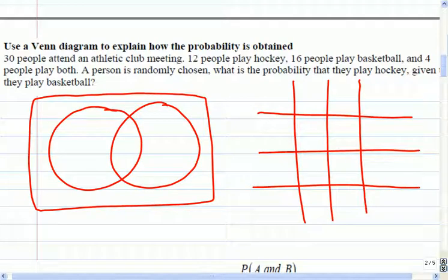30 people attend an athletic club meeting. 12 play hockey, 16 play basketball, and 4 play both. A person is randomly chosen. What is the probability they play hockey given that they play basketball? So you know for your table you might have hockey, not hockey, basketball, not basketball. It turns out for this question it's pretty straightforward because you're given hockey, basketball, hockey and basketball, so the Venn diagram is the quickest way to do it, but again, it's good to review the methods in case you've forgotten them.